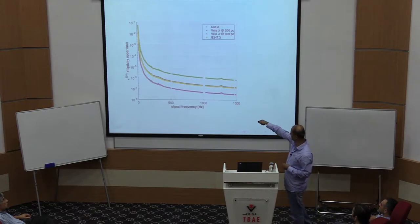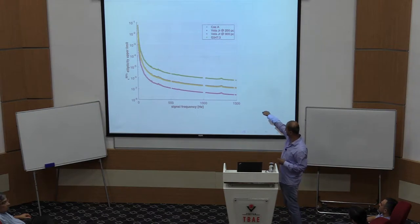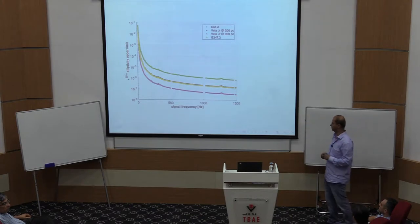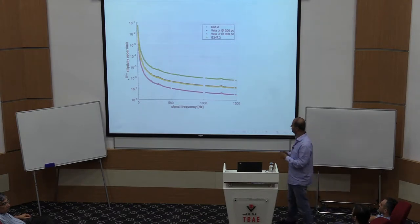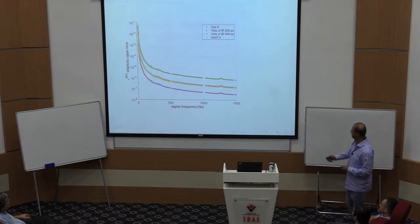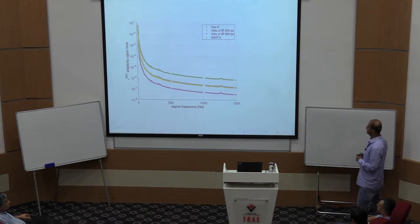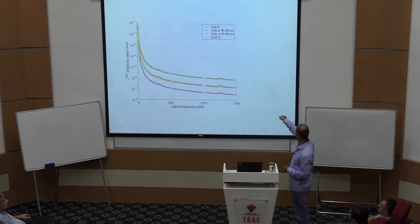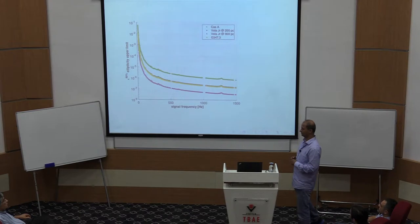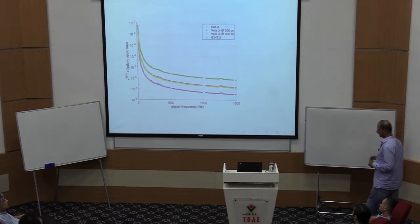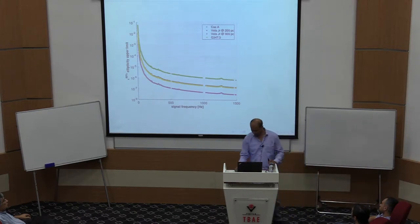Converting these results to limits on ellipticity — assuming that a neutron star is present and emitting due to mountains — the best limit comes from the case of Vela Junior assumed to be young and close. This limit is comfortably in a range where a neutron star with that ellipticity would not be surprising, so we are ruling out astrophysically interesting parameter space. Cassiopeia A gives the worst limit, and similar results are expected from O2 data.